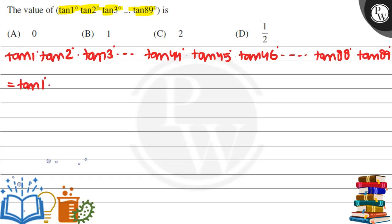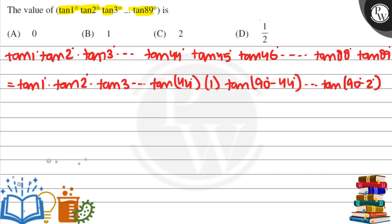Then I'll write tan 1 degree as it is, tan 2 degree as it is, tan 3 degree as it is, tan 44 degree as it is. Then it will be tan 45, we can write tan 46 degree as 90 minus 44 degrees, tan 88 degree as 90 degree minus 2 degree, or tan 89 degree as 90 degree minus 1 degree.